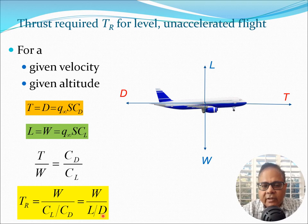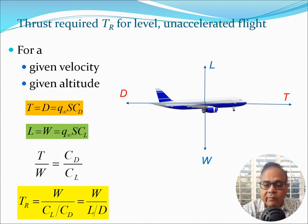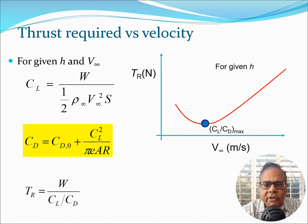C_L/C_D and L/D are exactly the same because they are essentially q_infinity × S × C_L or q_infinity × S × C_D — that's the lift and drag. We like to put everything in terms of weight because weight is something we know, whereas lift has to be calculated using aerodynamic methods. Similarly, thrust is something we know, but drag has to be calculated using the aerodynamics of the aircraft, the drag polar, and so on.